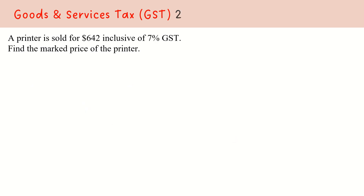Next, in a second example, we are told that a printer is sold for $642, which is inclusive of a 7% GST. We want to find out the marked price — in other words, the original price of the printer. This marked price is also considered the price before GST.